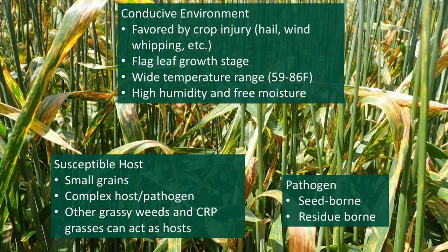We know the pathogen is seed-borne and we also know it is residue-borne, but we do not have all the tools in place to see how this disease is starting to become so rampant each year. We're suspecting that the seed-borne nature of it is why we're starting to see more of this disease over the last couple years. The susceptible host can be small grains — you can see bacterial leaf streak on wheat and barley, but often the strain of the bacteria are going to differ. So therefore, we have a very complex host-pathogen relationship. We also have other grassy weeds and CRP grasses that can be acting as host.